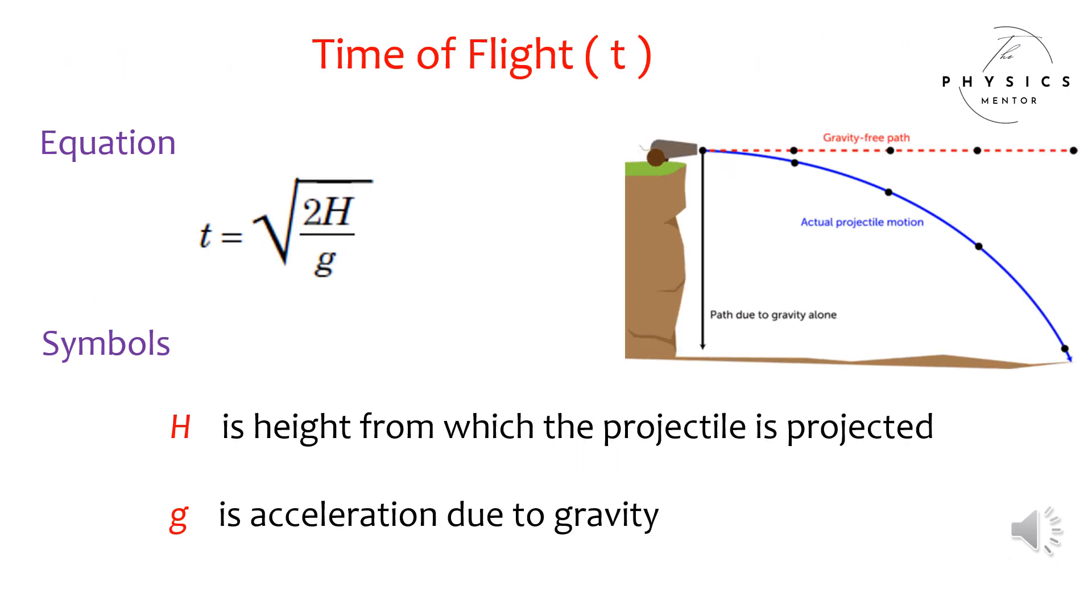Time of flight T: Equation - Time of flight equals square root of 2H divided by g. Symbols: H is height from which the projectile is projected, g is acceleration due to gravity.